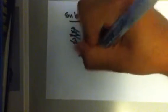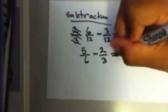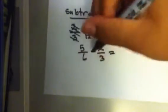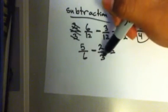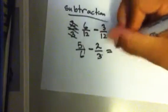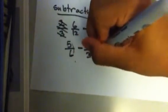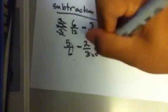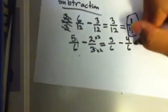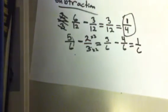Now, if the denominators aren't the same — say it was 5 over 6 minus 2 over 3 — you have to change the denominators to be the same. Over here, the common denominator is 6. So you don't have to change the first fraction, just the second one. So it's 5 over 6 minus 3 times 2 equals 6, and you do the same thing at the top: 2 times 2 equals 4. Now you subtract it: 5 minus 4 equals 1 over 6. And that's your answer.